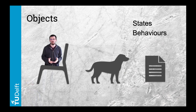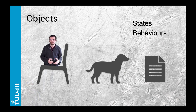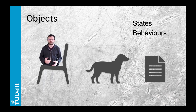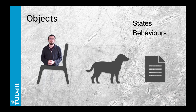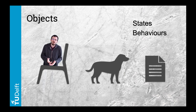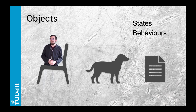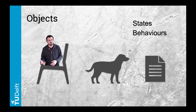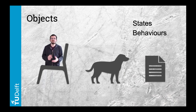An object has states, which is data that is stored in memory specifically for these objects. For instance, a chair could have a color, a size, a real estate. A bank account has a number, a current balance. In the doorbell example, the door is open or closed, locked or unlocked. These are states.